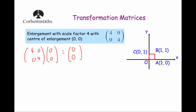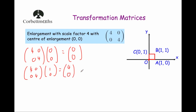Next, point A — the point 1, 0. Let's take our transformation matrix 4, 0, 0, 4 and multiply it by the point 1, 0. Multiplying the first row by the column: 4 times 1 is 4, 0 times 0 is 0, adding them together is 4. Then 0 times 1 is 0, 4 times 0 is 0, adding them together gives 0. So point A moves to the point 4, 0 — that's A dash. It moves 4 times as far away from the origin, as expected for a scale factor of 4 enlargement.